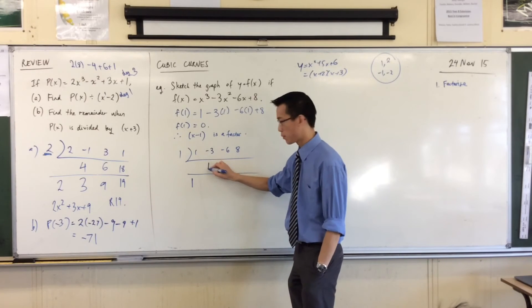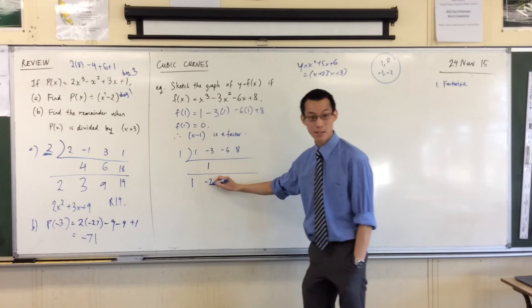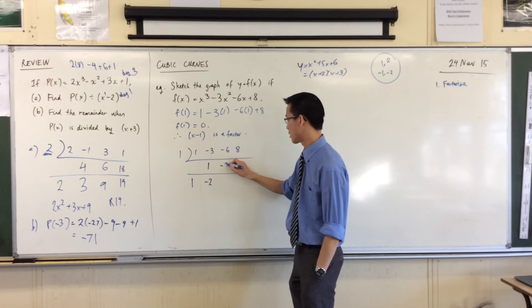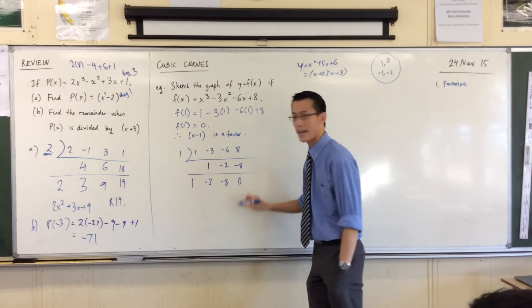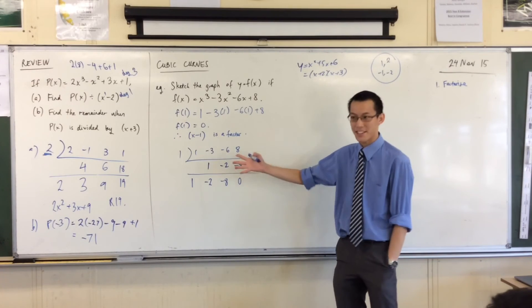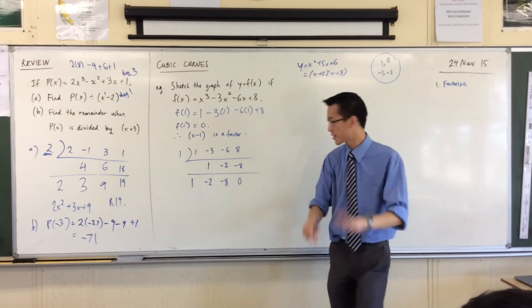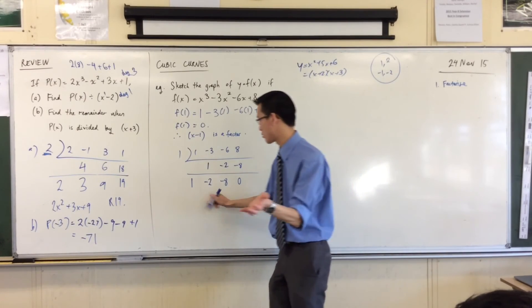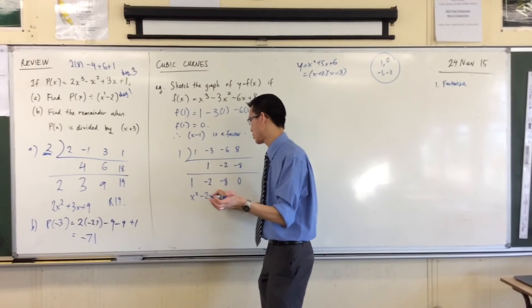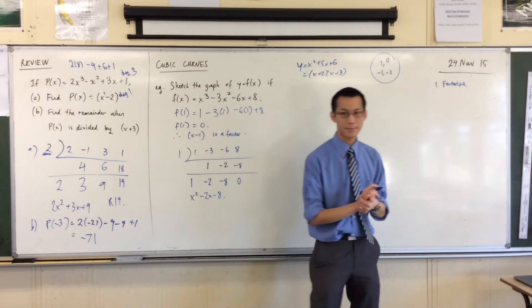So, multiply, add. Multiply, excuse me, this, and add. Last one, multiply and add. That's a relief. What's that zero mean? It remains zero, so it's a factor. Perfect. I take these numbers, and again, I interpret they're the coefficients. x squared minus 2x minus 8.